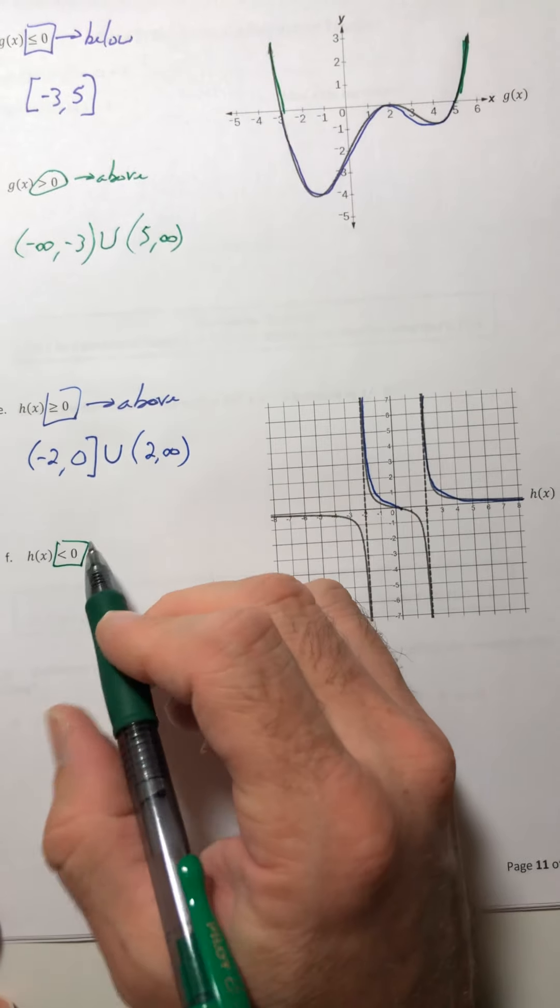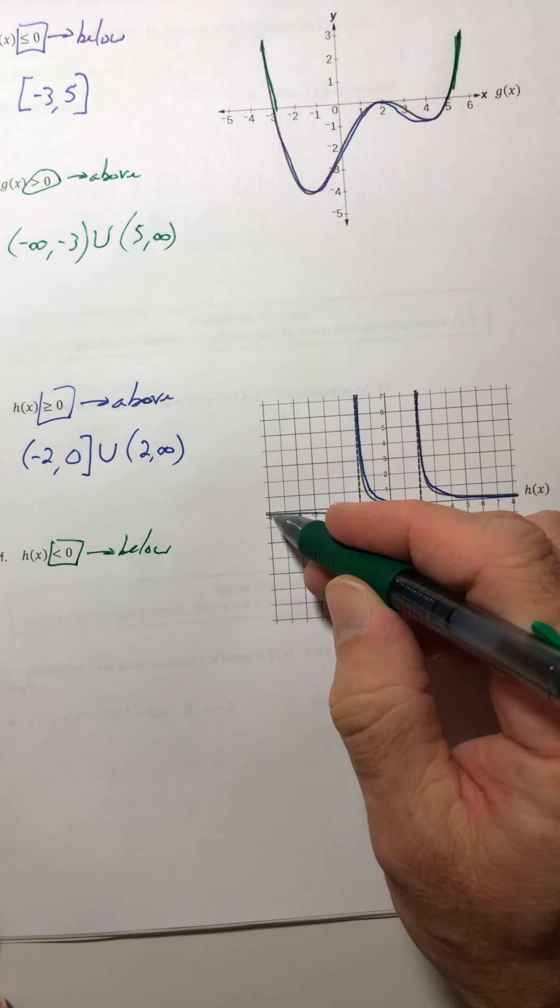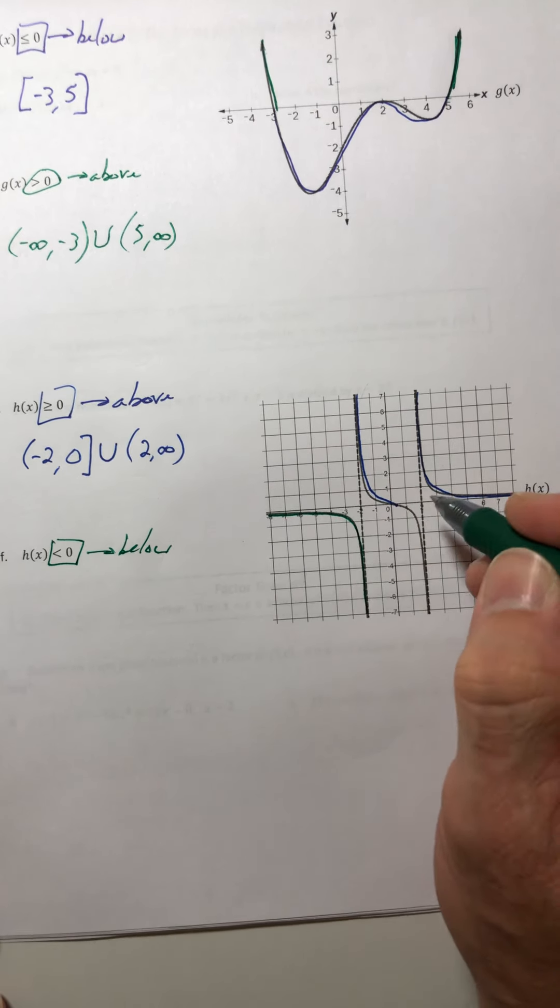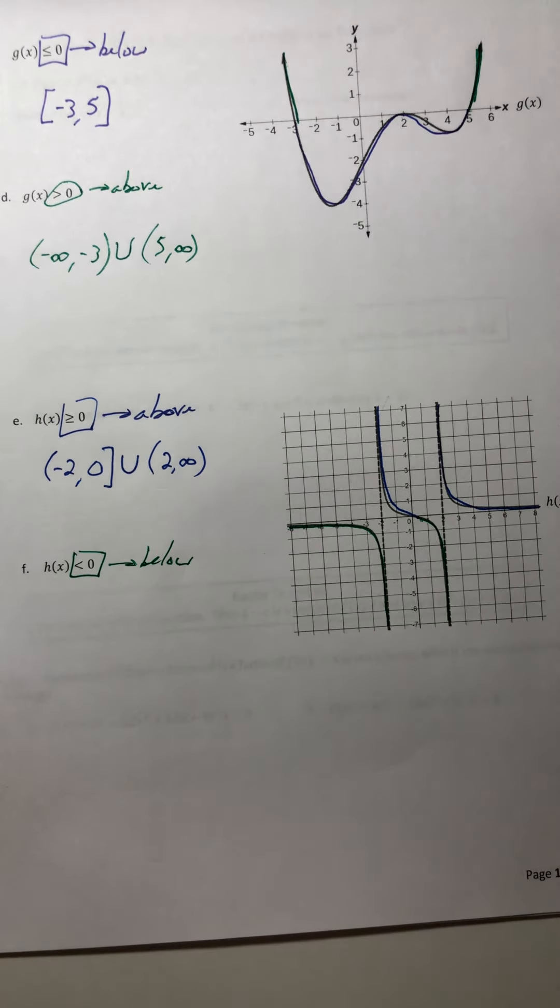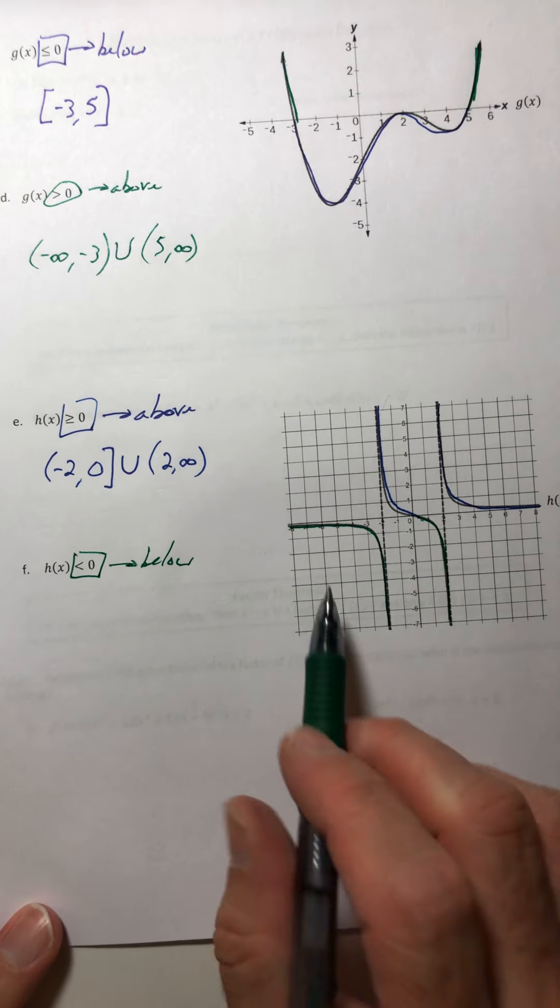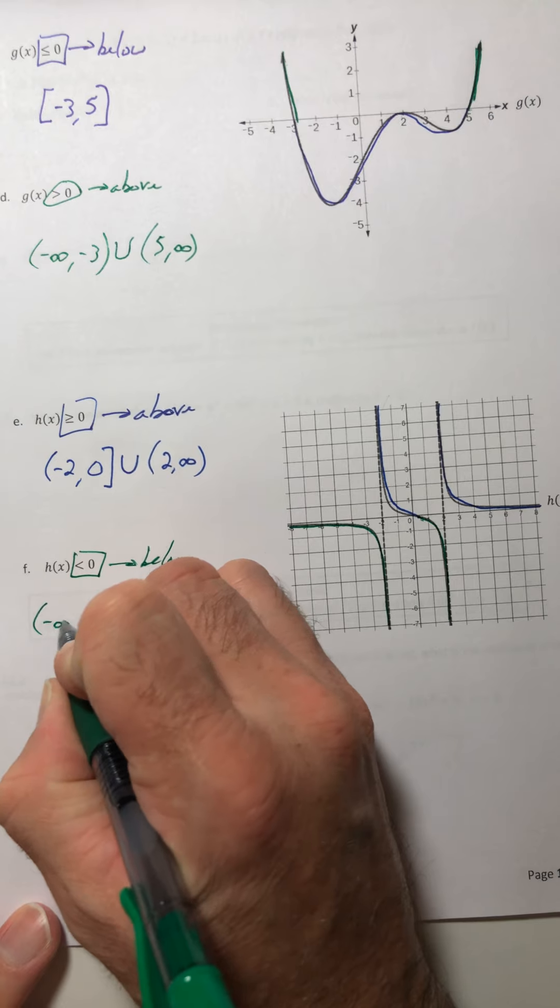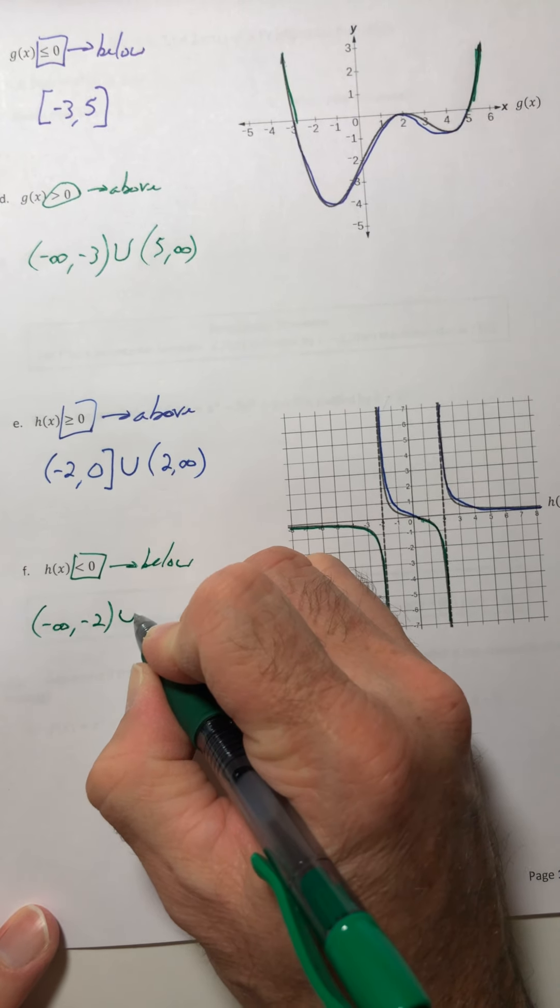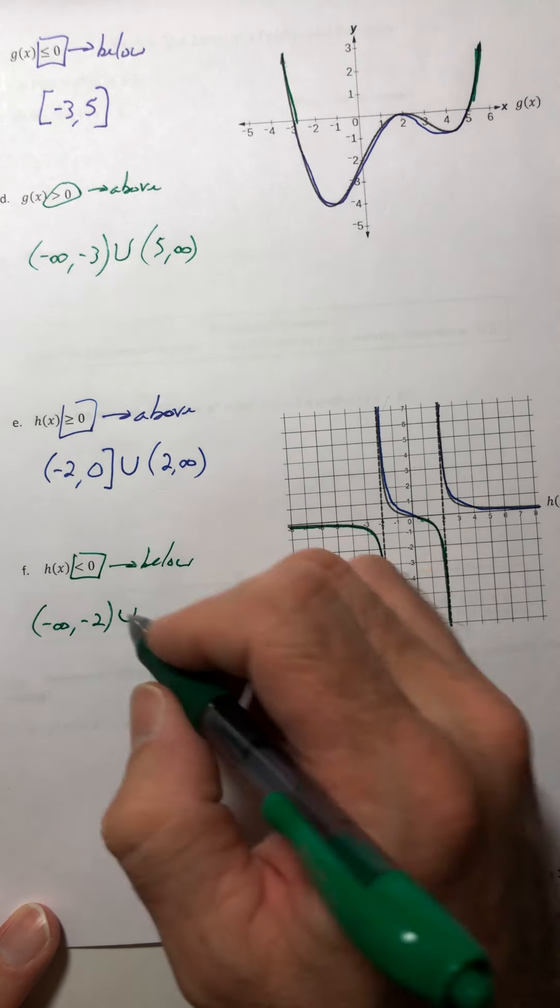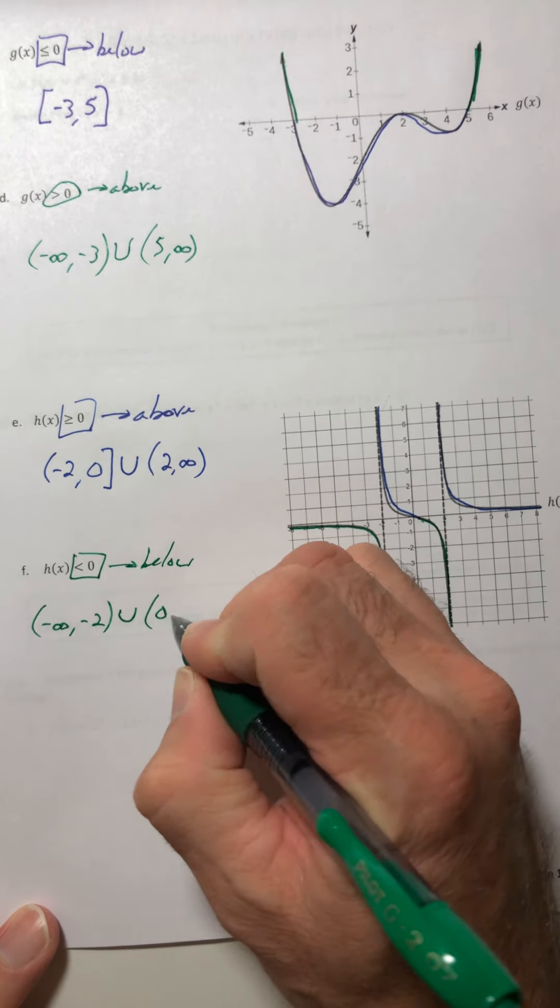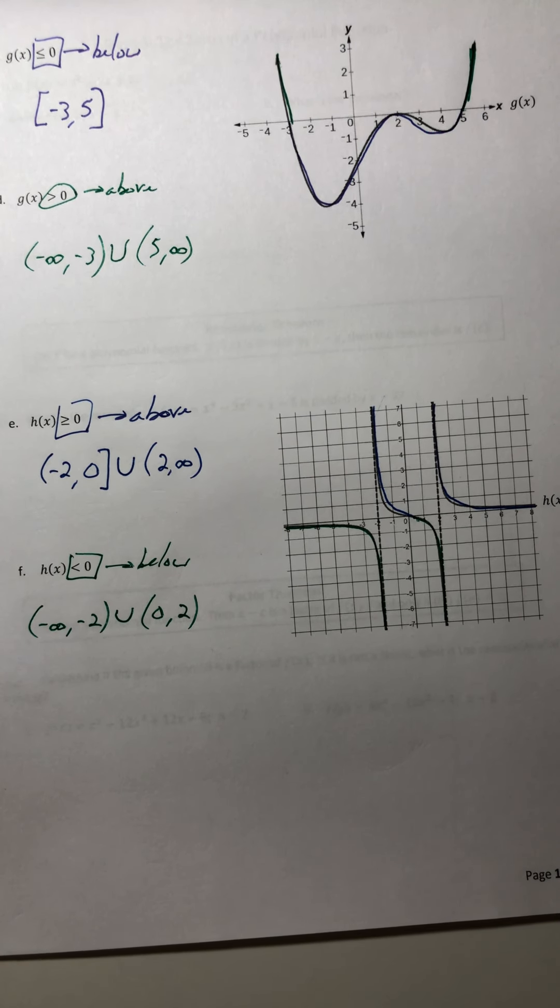All right, part f, less than zero, so you want it below. So that would be this section, and then this little part right in there. So this section is negative infinity up to negative two. And then this part started at zero and goes to two, but it doesn't actually hit it. So zero to two. All right, on to that.